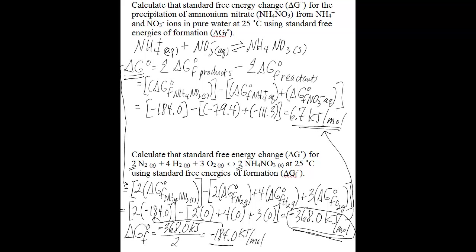So why is this? It's because of two things. First of all, the standard free energy of formation is defined for one mole of a substance. You found the standard free energy change for ammonium nitrate to be negative 368.0 kilojoules, and that was for 2 moles of ammonium nitrate based on the stoichiometry of the balanced chemical equation. So if you divide negative 368.0 kilojoules by 2, you find the value for one mole of the substance, and that's part of the definition of delta GF naught.